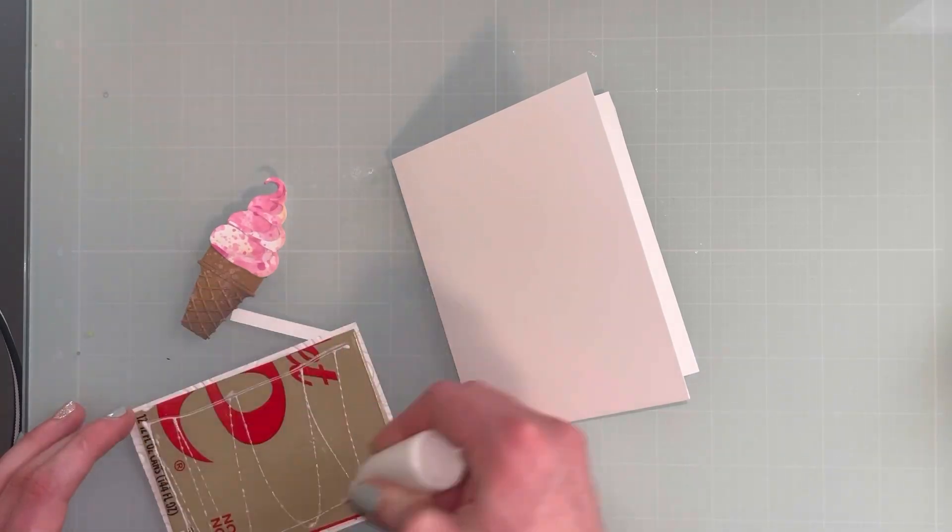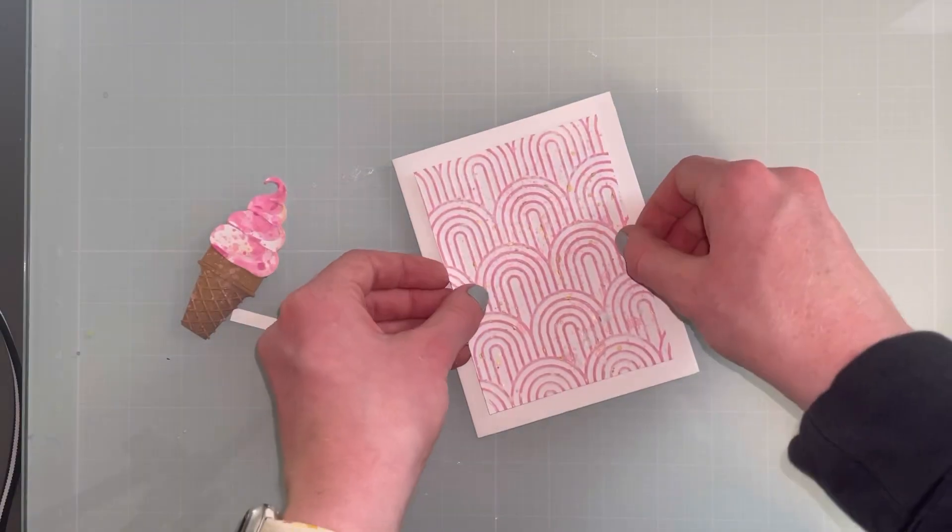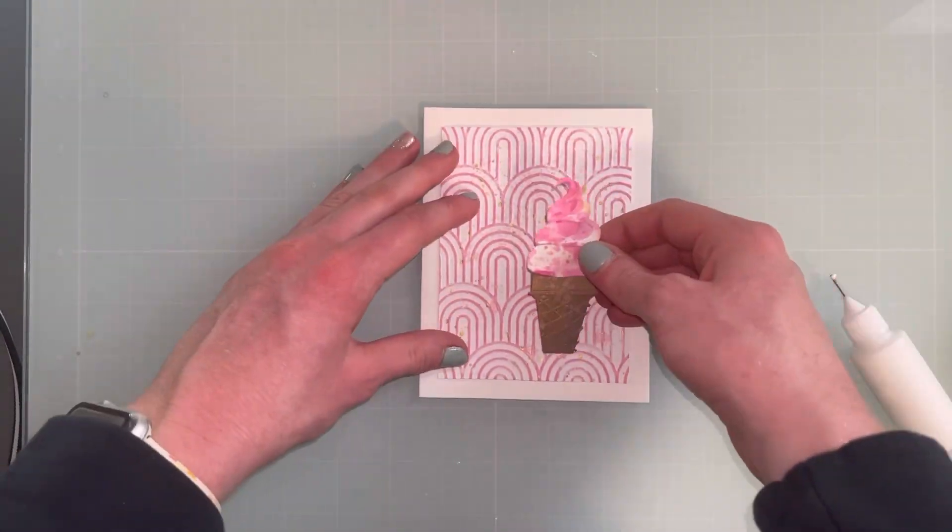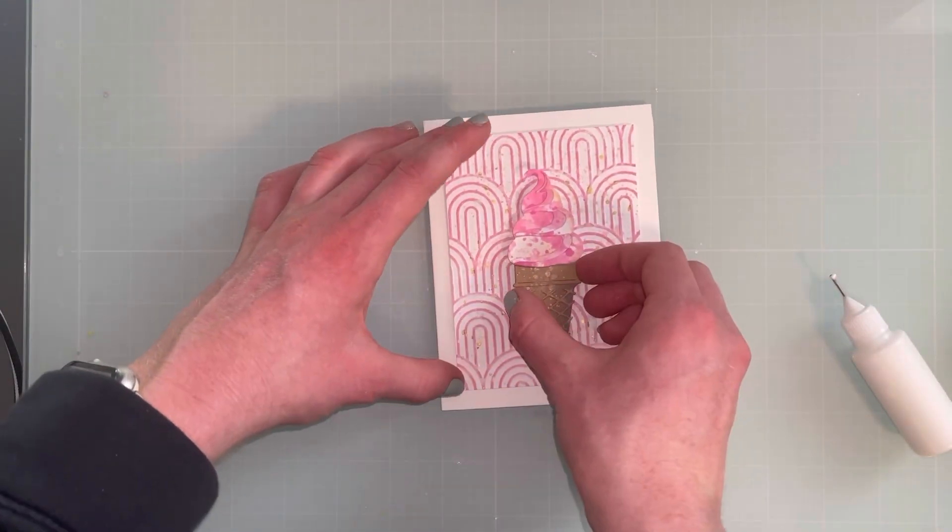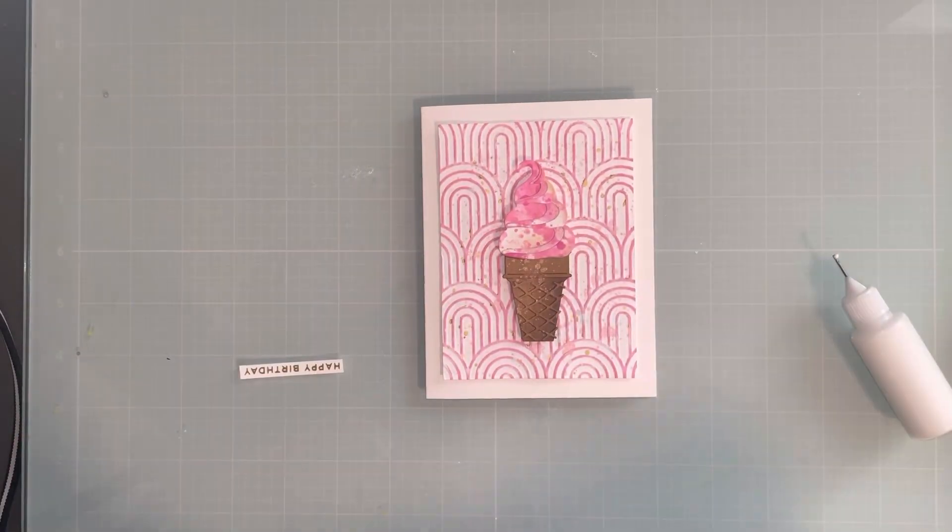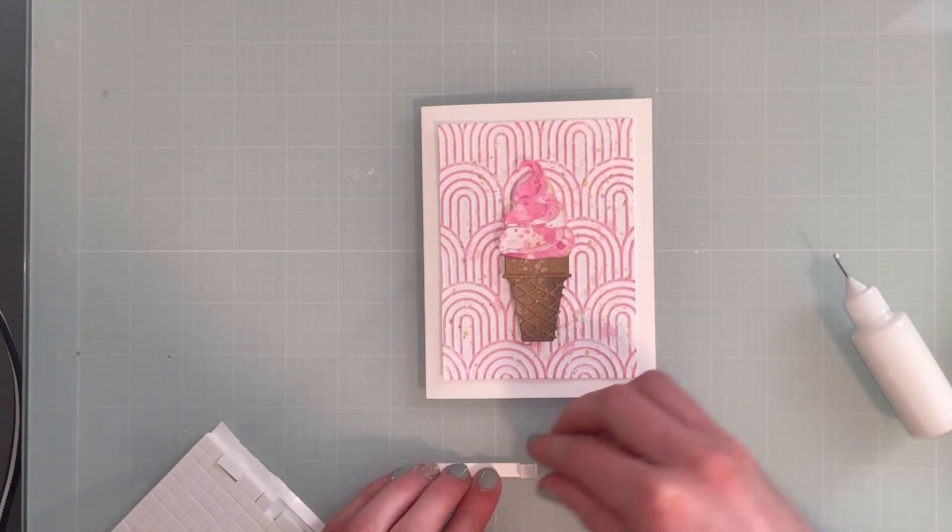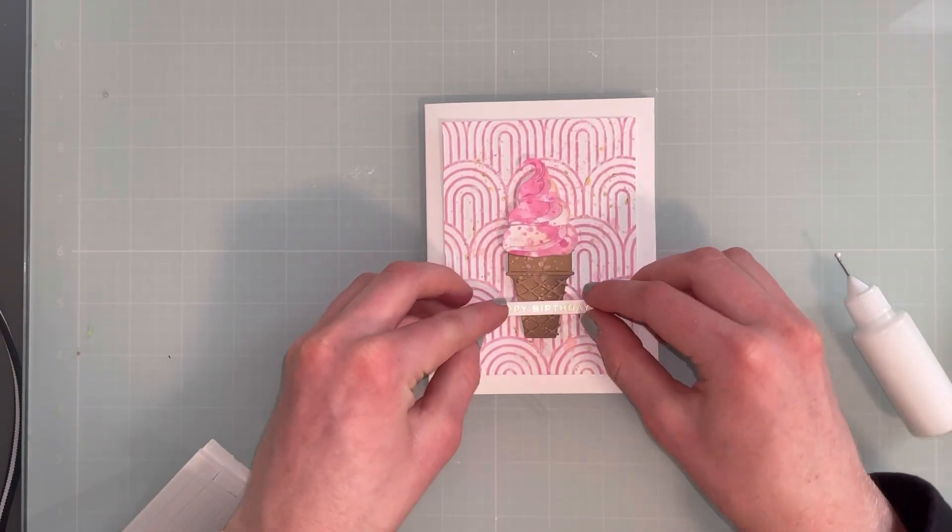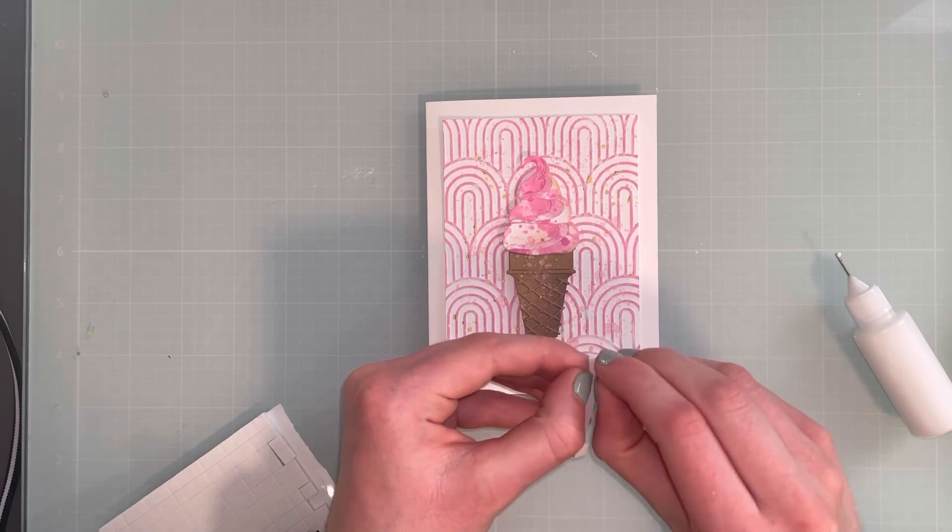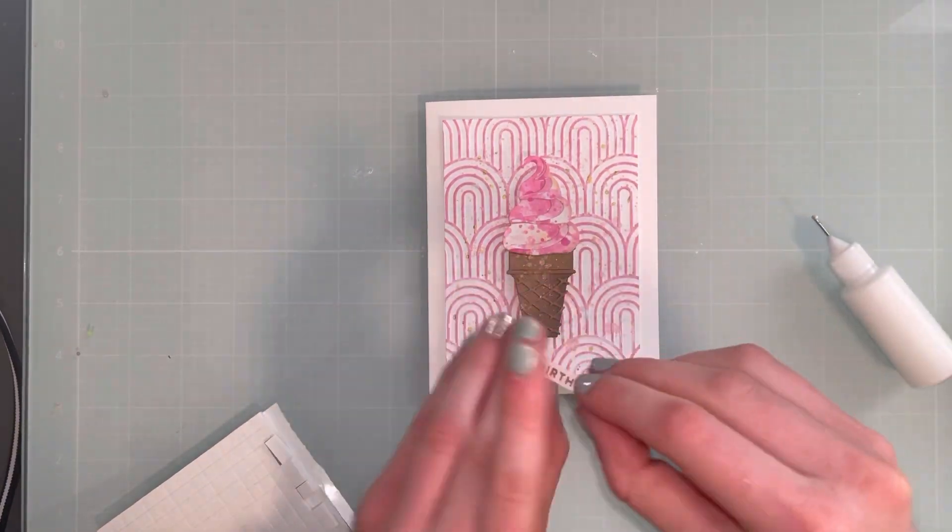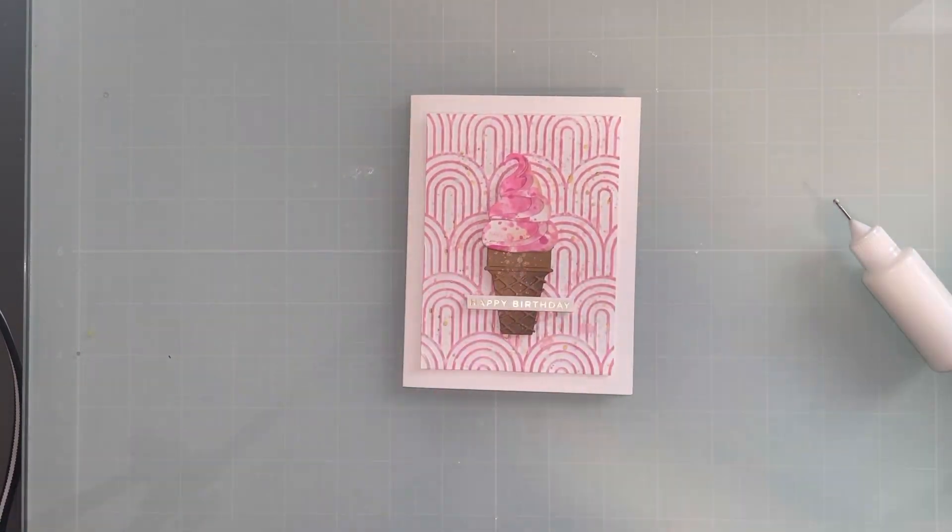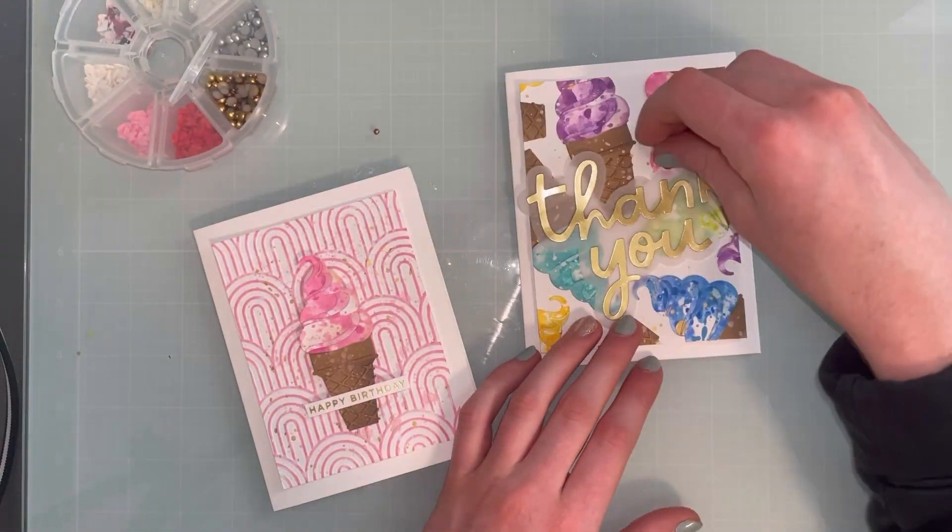Then for the second one, I just popped this panel up with the same cardstock. And then I popped up the ice cream cone with a little bit of foam tape and just added the sentiment. I used the sentiments from the Spellbinders Mini Everyday Sentiments and I chose either matte gold or silver foil based on the splatter that I used. And then I just used these foam squares from the Dollar Tree to pop up the sentiments just to make them even with the ice cream cone.